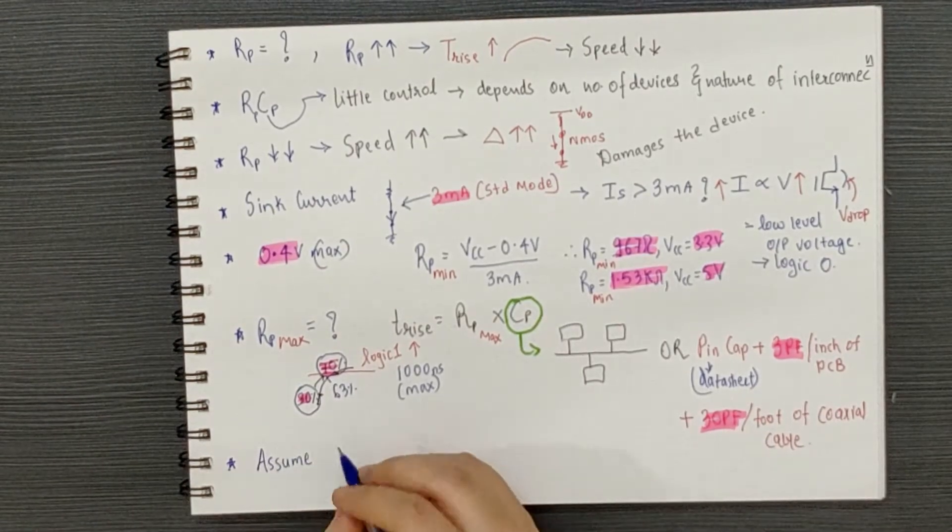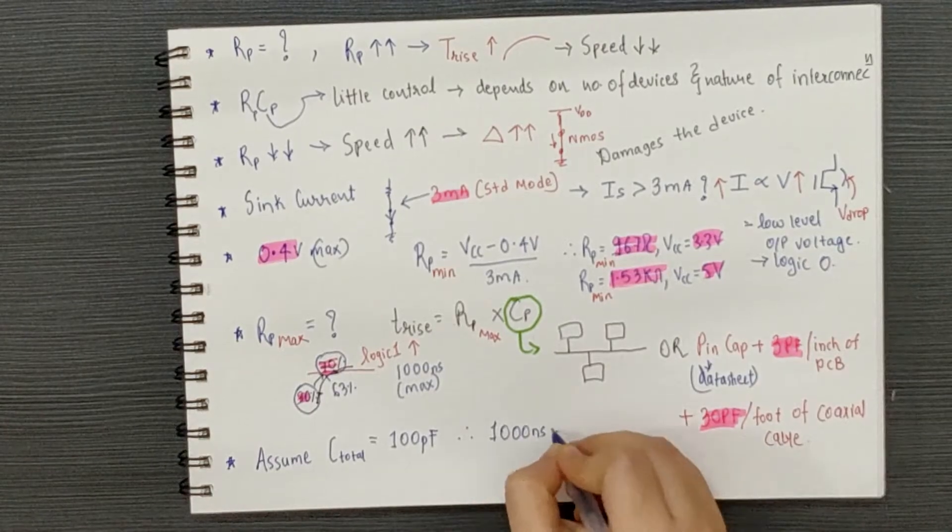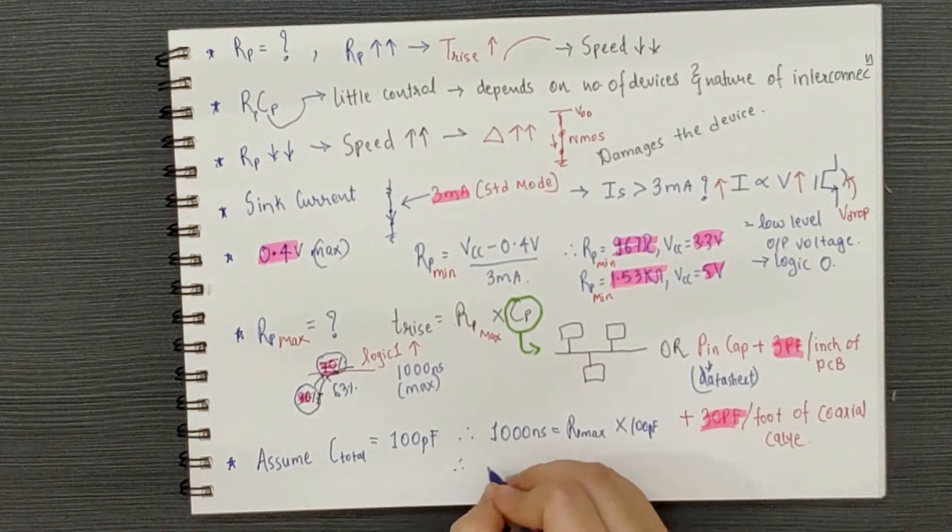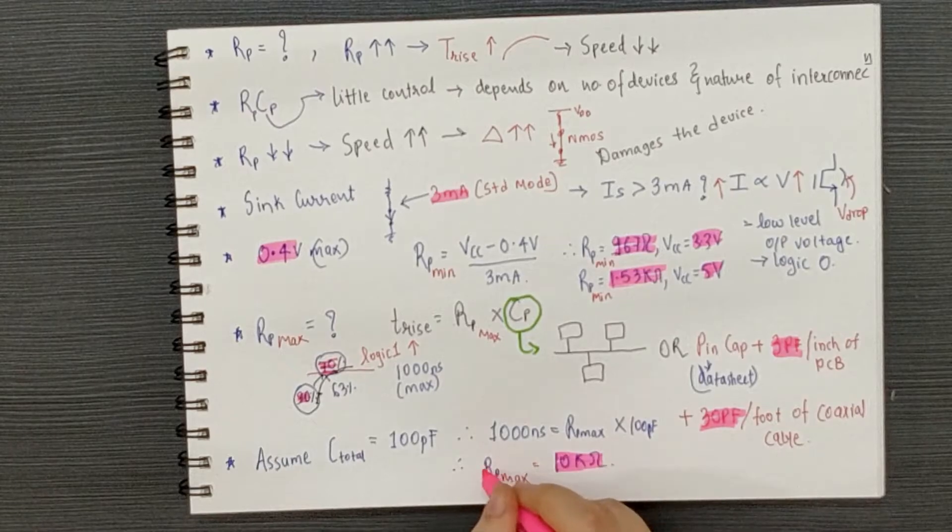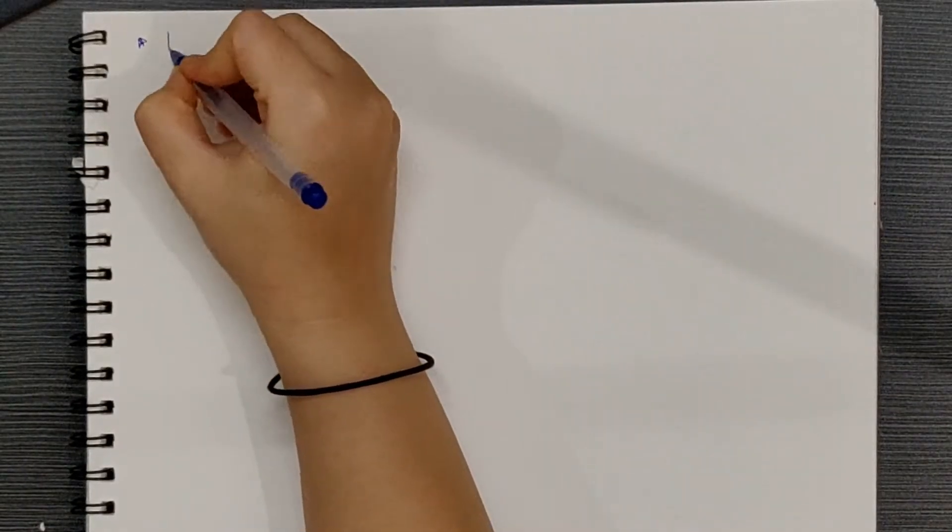So, let us assume that the total capacitance is 100 pF, just as an example value. Then, 1000 ns equals to RP max into 100 pF which gives RP max value of 10 kOhms.